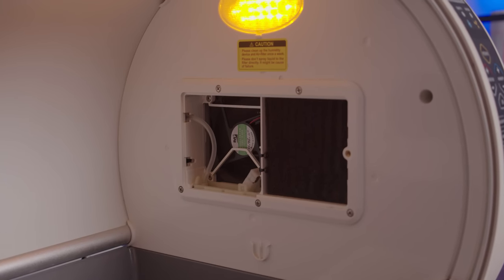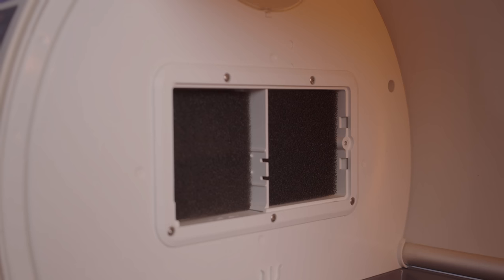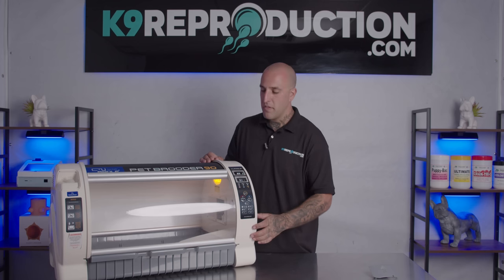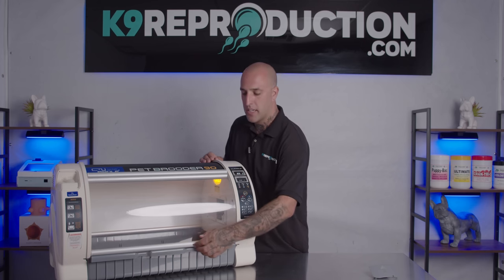The Pet Brooder 90 also comes equipped with air purification which includes three reusable air filters. Another great feature of the Pet Brooder 90 is the easy to use sliding front door.